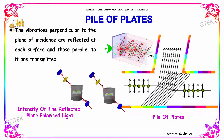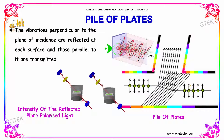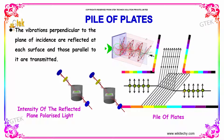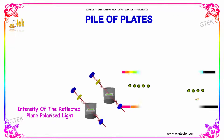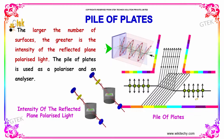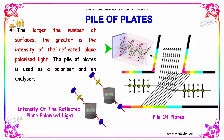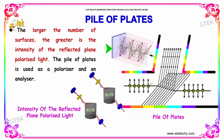The vibrations perpendicular to the plane of incidence are reflected at each surface, while those parallel to it are transmitted. So, the larger the number of surfaces, the greater is the intensity of the reflected beam. The pile of plates are used as a polarizer and also an analyzer.